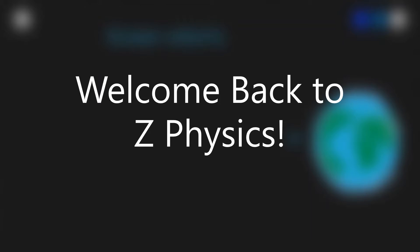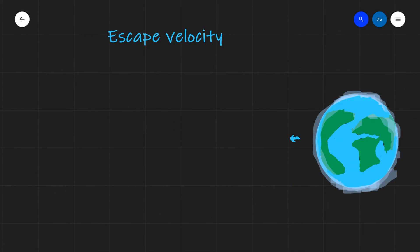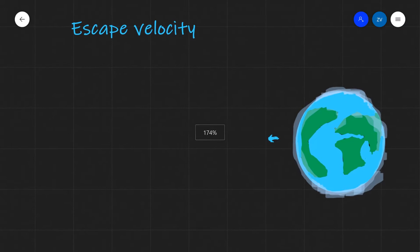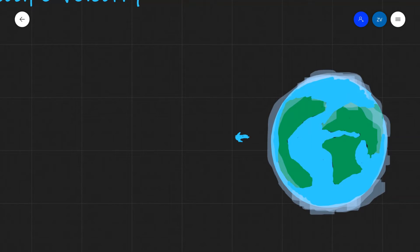Today we're going to be talking about escape velocity. To visualize this, let's imagine we have a planet, for instance the Earth, and an object—maybe a rocket that's been fired off—wanting to escape the gravitational pull of the Earth.